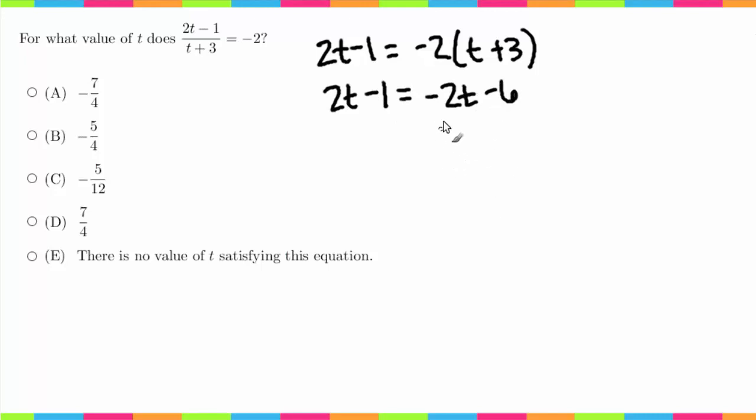Now all we're going to do is combine like terms. I'm going to bring my t over and I'm going to bring my 1 over, so over here we get 4t is equal to -5. We divide by 4 on both sides.